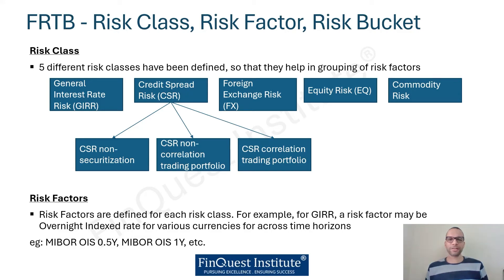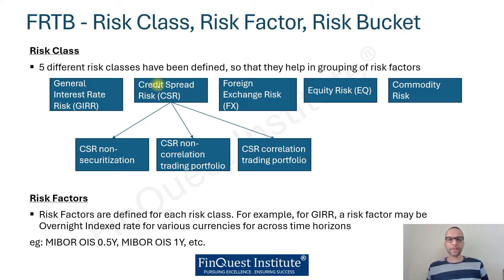In this video we will understand a few key terminologies under the FRTB guideline, namely risk classes, risk factors, and risk buckets. Under the FRTB guideline there are five main risk classes defined: the General Interest Rate Risk (GIRR), the Credit Spread Risk (CSR), the Foreign Exchange Risk, Equity Risk, and Commodity Risk.